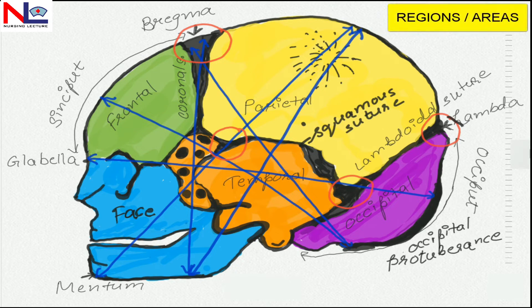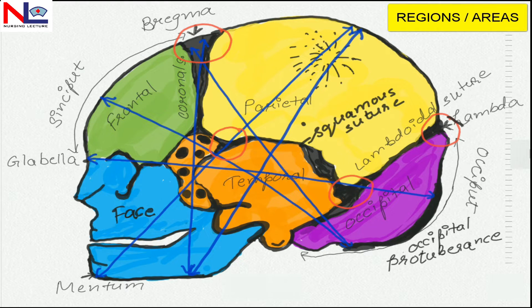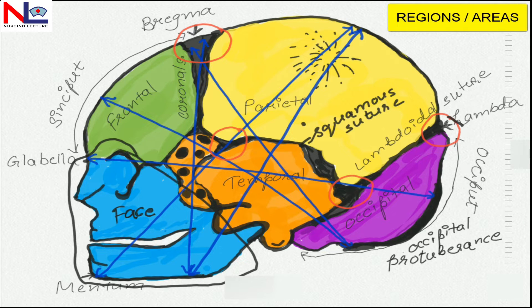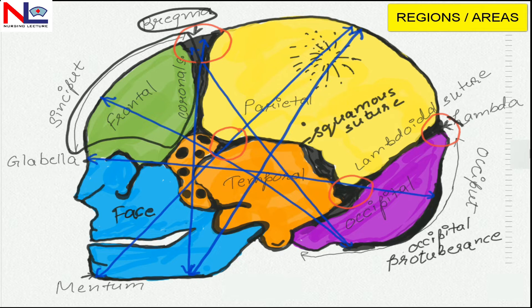Next we can see the regions or areas of the fetal skull, and there are three areas: face, sinciput, and vertex. The face is the smallest area in the newborn and extends from the supraorbital ridges or the root of the nose to the chin (or mentum) and at the base of the neck. Next comes the sinciput, and it extends from the bregma or anterior fontanel to the supraorbital ridges.